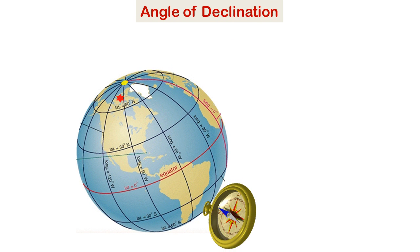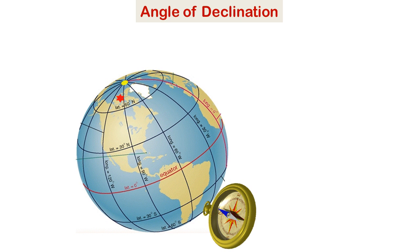The magnetic compass points in the direction of the magnetic north whereas the maps are drawn with respect to the geographical north. So there is a discrepancy when one uses a compass to find direction on a map, and this discrepancy varies at different points on the map.